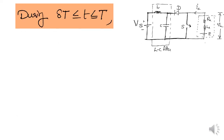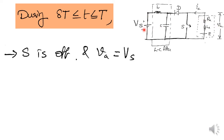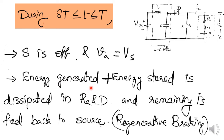During δT to T, when the switch is open, the armature terminals are connected to the power supply, so the armature terminal voltage equals Vs. During the previous interval a part of the electrical energy generated was stored in inductor La. During this interval the motor continues to develop electrical energy, so that electrical energy plus the energy stored in La during the previous interval is fed back to the source through the diode. The remaining energy is dissipated in Ra and diode D. This is known as regenerative braking.